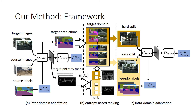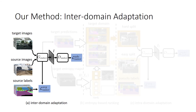This is the framework of the proposed model, which consists of three parts: an inter-domain adaptation, an entropy-based ranking system, and an intra-domain adaptation. The first step is inter-domain adaptation, based on common unsupervised domain adaptation approaches. We utilize the entropy of predictions from segmentation outputs to align the domain gap. The inter-domain adaptation consists of a generator and discriminator. The generator produces the entropy map for the input image, and the discriminator predicts the domain label for the entropy map, while the generator is trained to fool the discriminator.